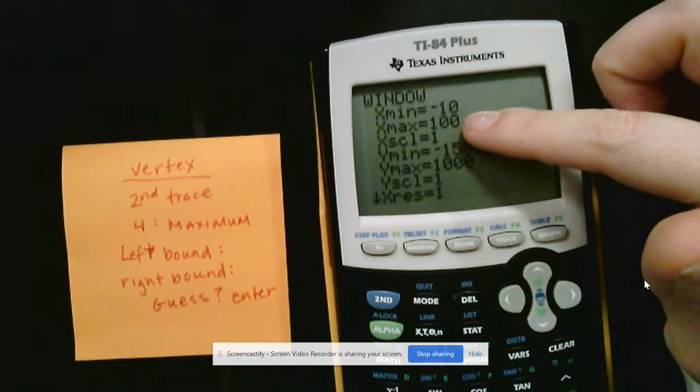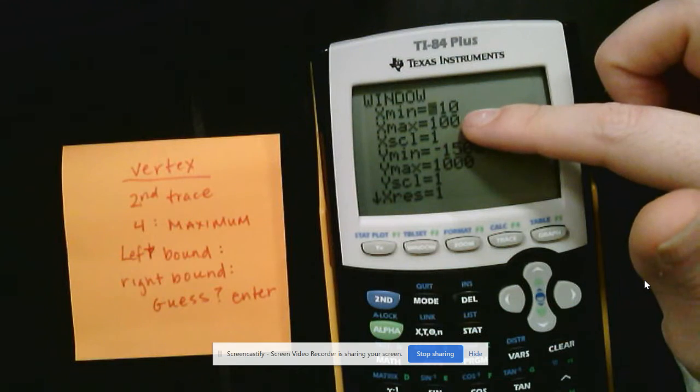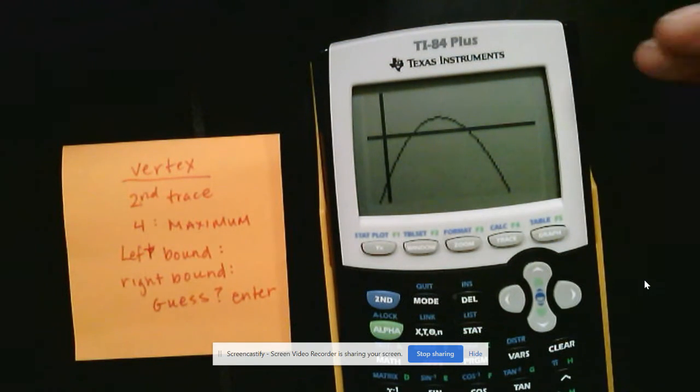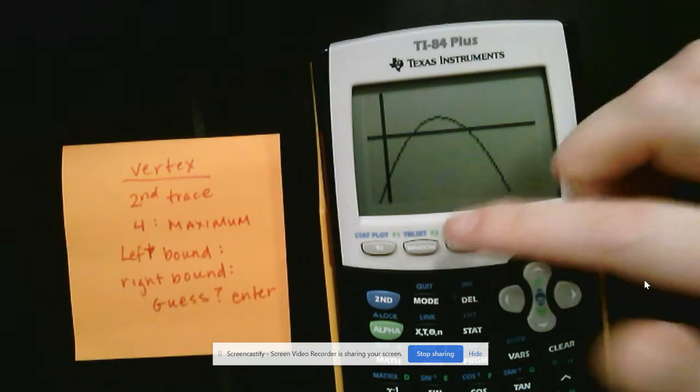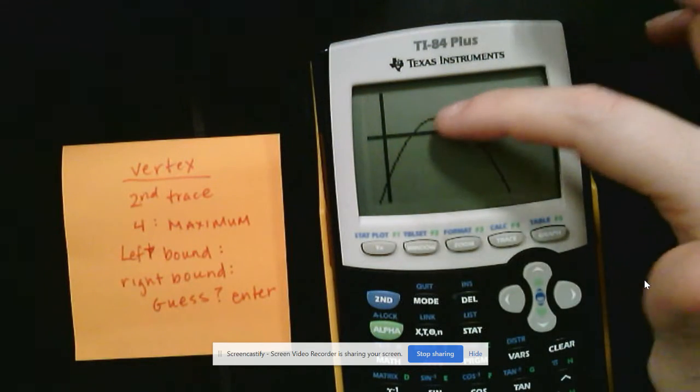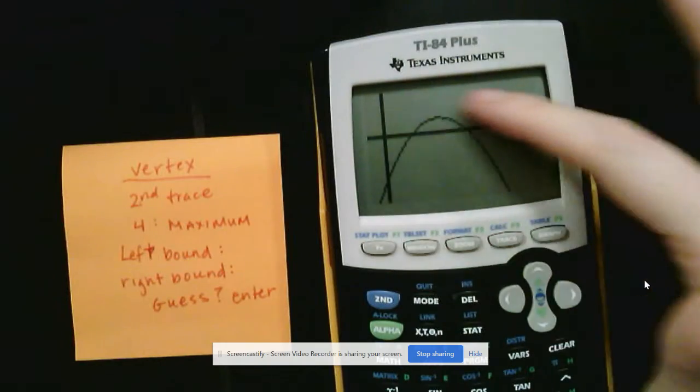So negative 10 to 100. That happens to be the window I chose for my X values. The default is negative 10 to 10. So if you didn't change that, then you could use negative 10 to 10. Again, I think that that's just a good basic rule to use because that's going to be the only highest point. That's it. There's nothing else we could mistake it.